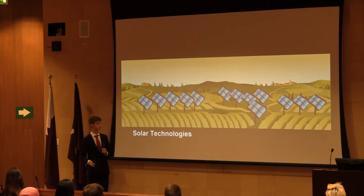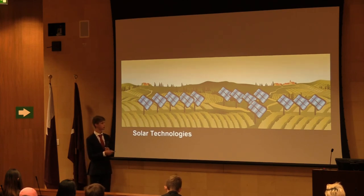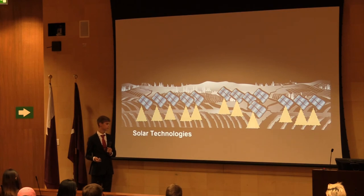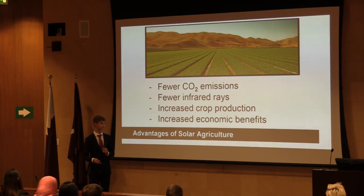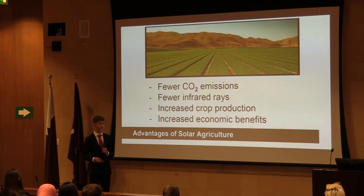Naturally, crops are limited to growing only during the day with the nutrients they are provided. We've already managed to bend that with genetically modified organisms and fertilizers, which abolish the natural limits of growth and pest damage. But if we applied solar power, batteries, and LED lights, we would be able to grow plants during the day and the night, which could potentially double agricultural production. The advantages are clear: fewer CO2 emissions from replacing oil appliances with solar appliances, fewer infrared rays reflected back into the atmosphere because UV rays are absorbed by the solar panels, increased crop production, and increased economic benefits. A farmer could potentially save $1,000 a year by using solar power just because of energy bills.